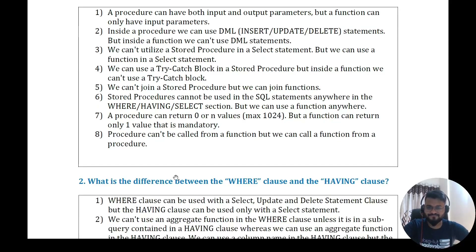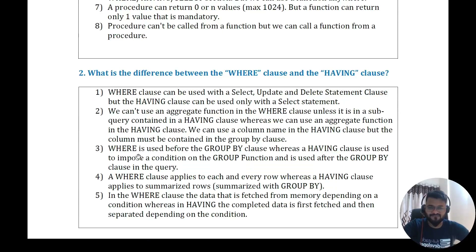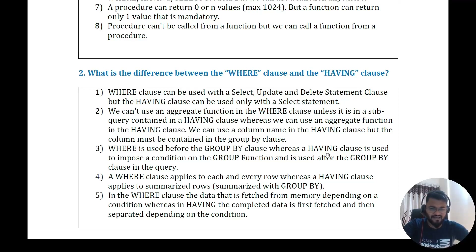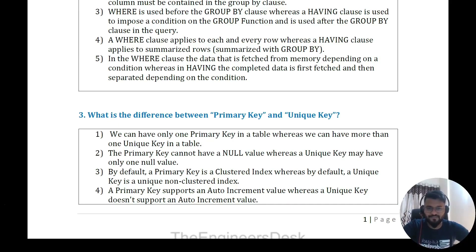The next question is: what is the difference between the WHERE clause and the HAVING clause? The WHERE clause can be used with SELECT, UPDATE, and DELETE statements, but the HAVING clause can only be used with a SELECT statement. We cannot use an aggregate function in a WHERE clause unless it is in a subquery contained in a HAVING clause. WHERE is used before GROUP BY, whereas HAVING is used after GROUP BY. WHERE applies to each row, whereas HAVING applies to summarized rows.